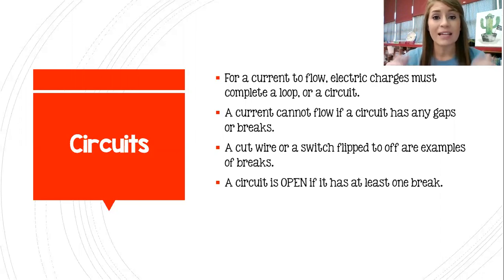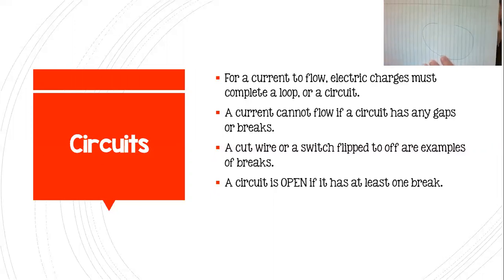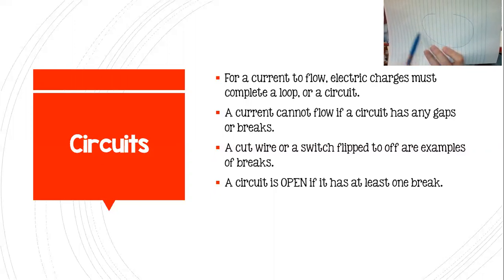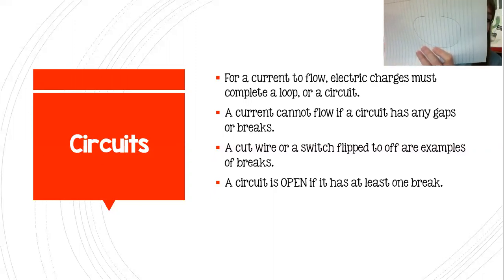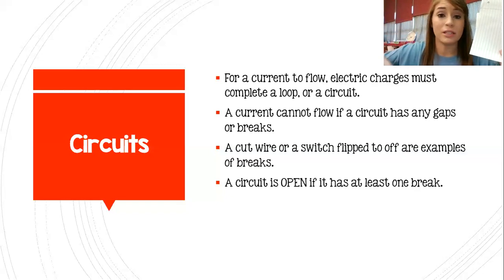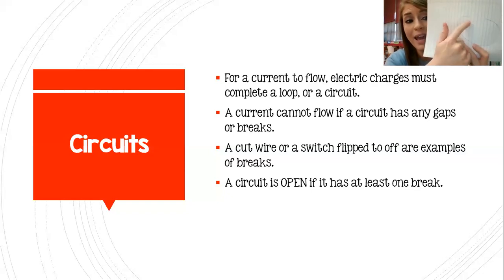A circuit is open if it has at least one break. Think of it like a loop — if it's open, that electricity can flow along but then it can't just jump across the gap, like you're jumping over a puddle. It's got to be able to go continuously through that circuit. So circuits that are open can't complete the circuit, and that electricity is not going to flow, which means the lights will be off, the sound will be off, or the TV is going to be off. It's open.